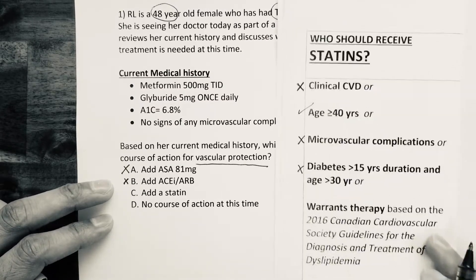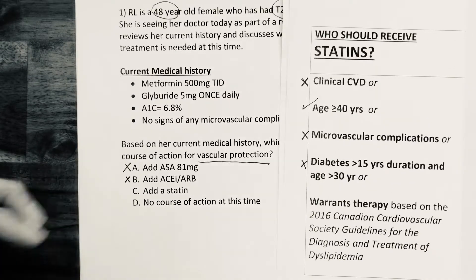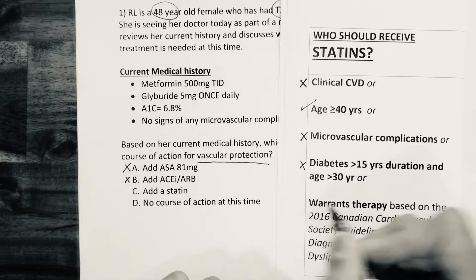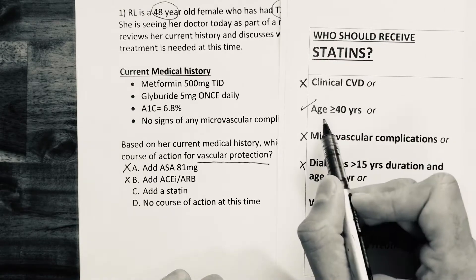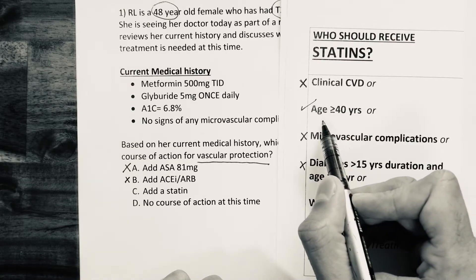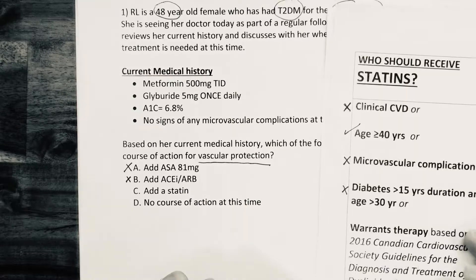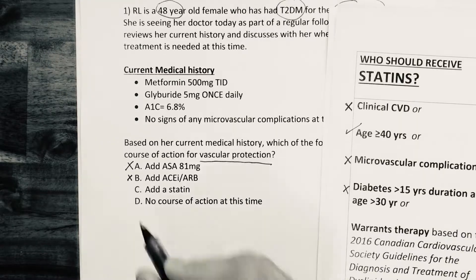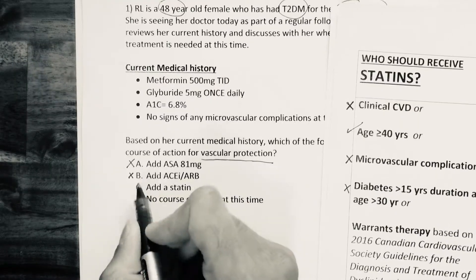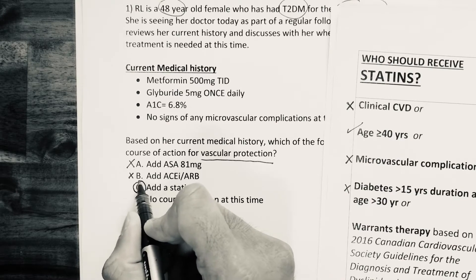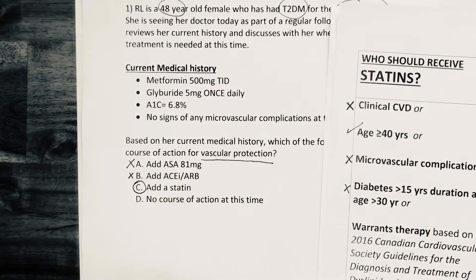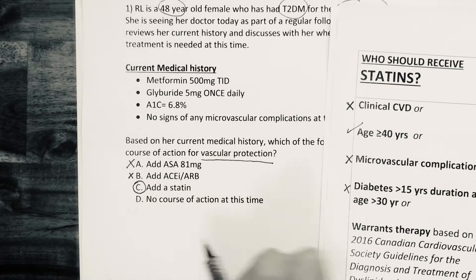The other option is if guidelines warrant therapy. From this checklist, she is greater than 40 years of age, so she is eligible for adding a statin. We know what our answer is: add a statin. No course of action can be ruled out as well.